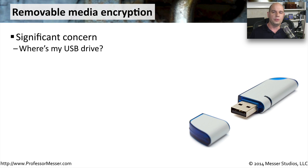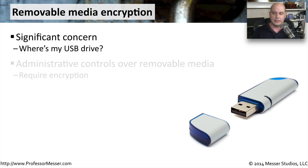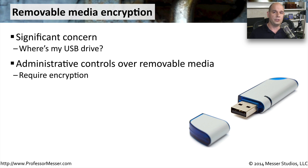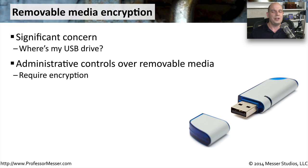The security of data stored on removable devices is a major concern for security administrators. USB keys can easily be lost, and wherever that USB key ends up is where your data will now live. It's very important that data is protected on those removable devices. Security and system administrators in your environment may set policies in the operating system that require data stored on a removable device to be encrypted. They can automate this process so that whenever you store data on a removable device, it will always be encrypted without any input from you — ensuring that if that information is lost, the data itself will not be accessible.